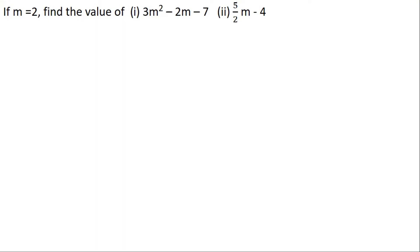The first question we will solve is: if m is equal to 2, find the value of 3m squared minus 2m minus 7, and also 5/2 m minus 4. Let us solve the first expression, that is 3m squared minus 2m minus 7.